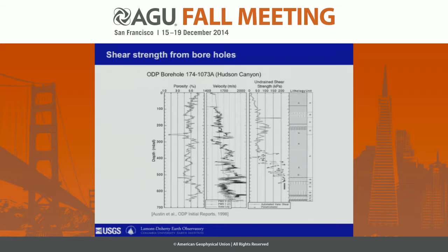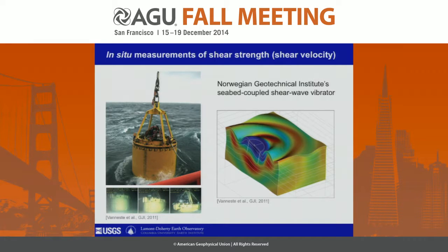This is an example from the ODP borehole to the south of Hudson Canyon where we have a shear wave measurement extending down to about 600 meters below the seafloor. This tells us a lot of information, but it's information about one particular place in space and also in time. To characterize mechanical properties — namely the shear strength of sediments — over wider areas, people often appeal to measuring shear wave velocity through seismic methods. This is one of the more advanced shear wave generators that I'm aware of, from the Norwegian Geotechnical Institute.